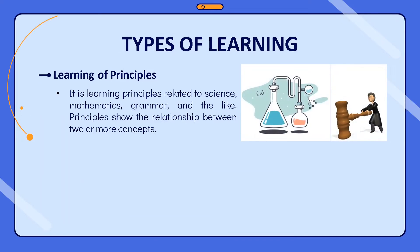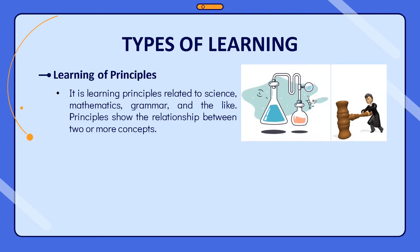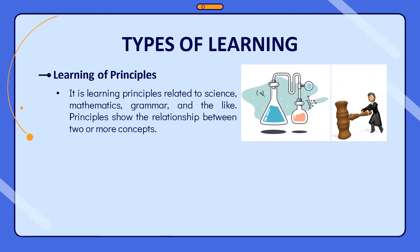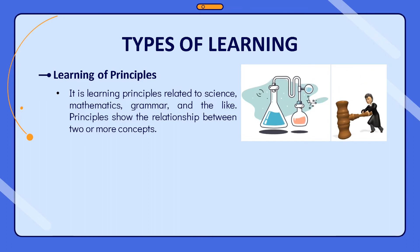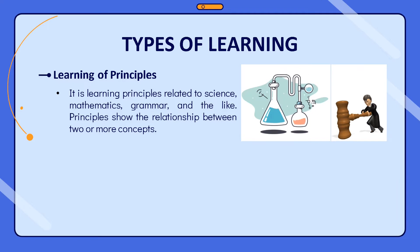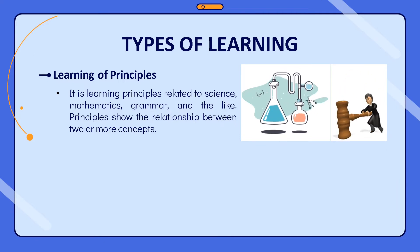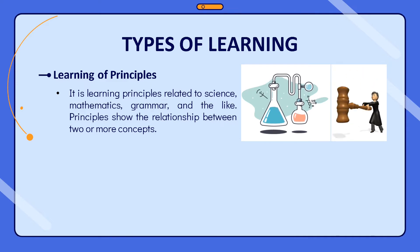Learning of principles is related to science, mathematics, grammar, and the like. Principles show the relationship between two or more concepts. Some examples are formulas, laws, associations, and correlations. It is the type of learning used to manage one's work effectively.